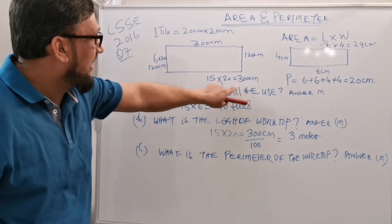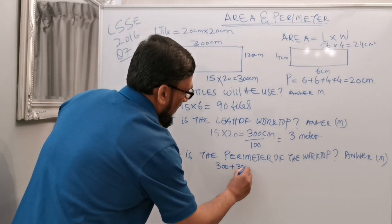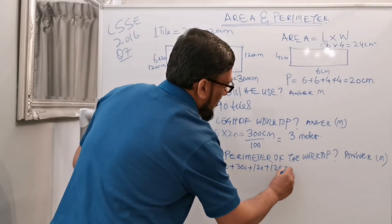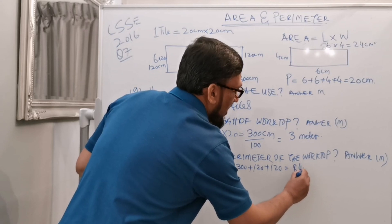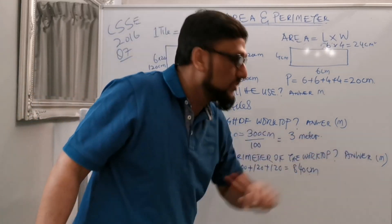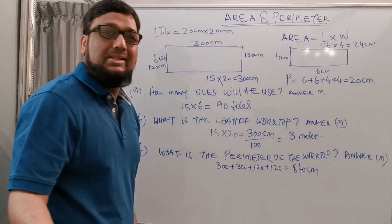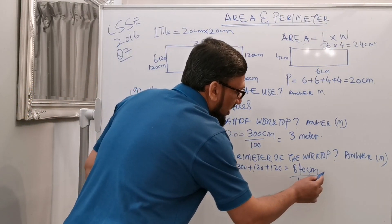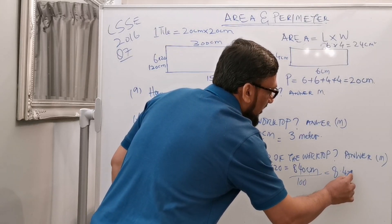Now we know all sides: 300 plus 300 plus 120 plus 120, which gives 840 centimeters. Since 1 meter equals 100 centimeters, we divide by 100 to get the answer of 8.4 meters.